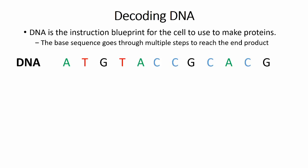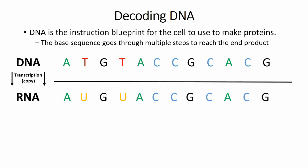First, the sequence is copied into a slightly different nucleic acid strand called RNA in a process called transcription. This is not a perfect copy as RNA has a slightly different structure and also has a modification to the thymine or T base represented here by the letter U.